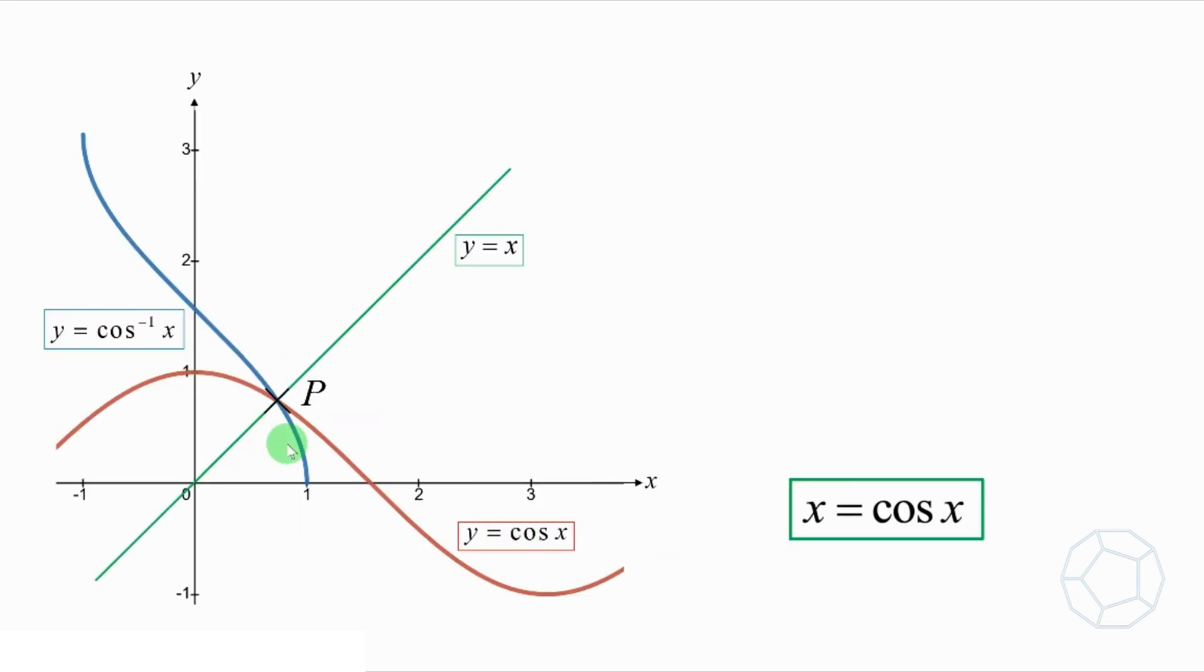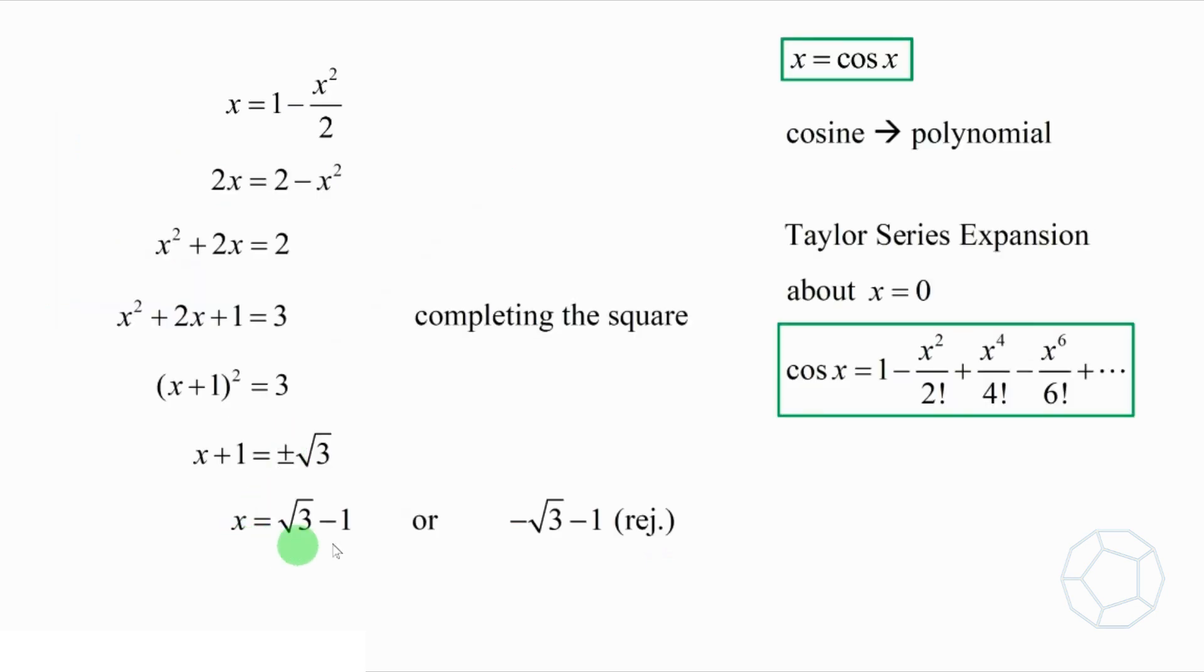Therefore, we have an approximate value, x is equal to root 3 minus 1, which is around 0.73205. If we use graphing software, a more accurate answer is 0.73908. Our approximation is pretty nice, isn't it?